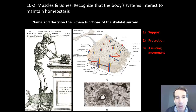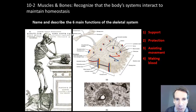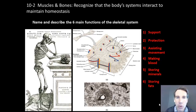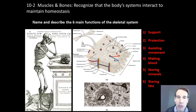Assisting in movement — if there are muscles attached to bone, that allows the body to move around. Making blood: at the end of the bone, there's a type of marrow called red marrow, and that's where red blood cells are made. Storing minerals: the bone is made out of calcium, which is a mineral that makes the bone strong, and the calcium can be used for muscle contraction in the body. And finally, storing fat: in the long cavity, there's an area where fat is stored, which is another function of the bone.